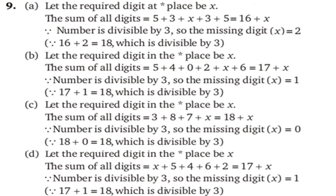Question number 9 — replace the star with the smallest digit to make the following numbers divisible by 3. Let the required digit at the star place be X. For part A, sum the digits: 5 plus 3 plus X plus 3 plus 5 equals 16 plus X. Since the number must be divisible by 3, the missing digit X is 2, because 16 plus 2 equals 18, which is divisible by 3. Similarly solve B, C, and D parts.